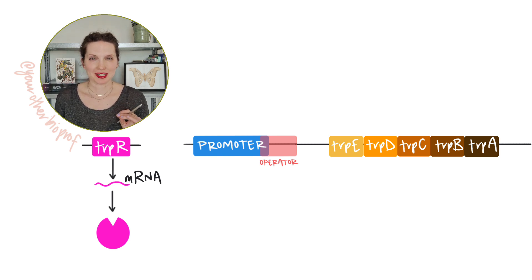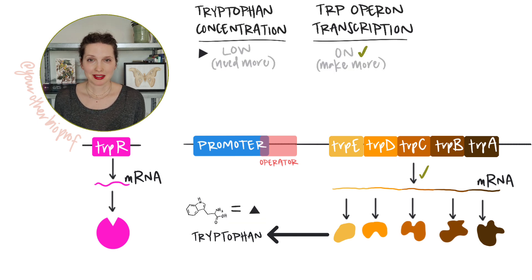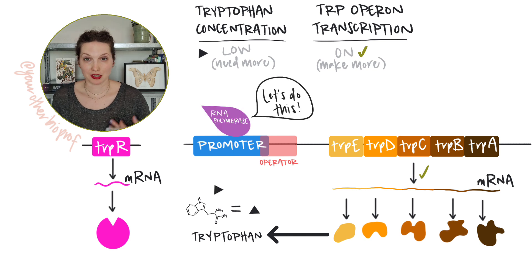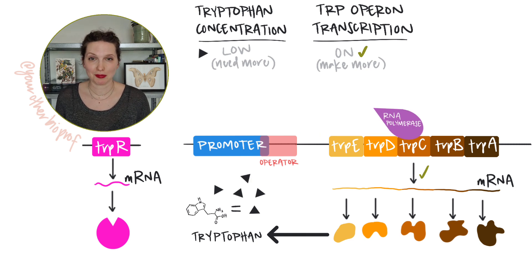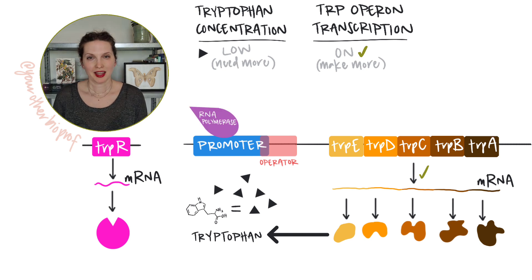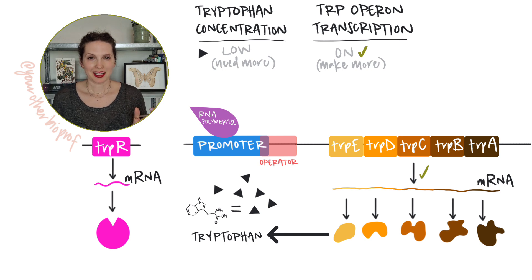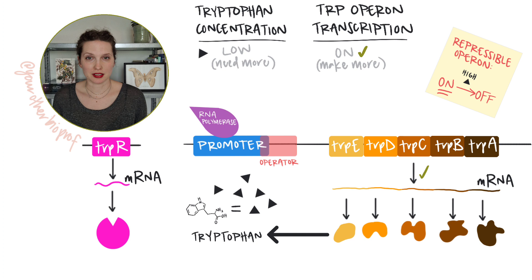It makes a little bit more sense if you keep the function in mind. What do the structural genes do? They encode enzymes for tryptophan biosynthesis — the production of tryptophan. That means that the cell is going to want to keep transcribing the structural genes, producing plenty of mRNA to make plenty of enzymes to make tryptophan, until it doesn't need any more tryptophan. This means that the trp operon is a repressible operon. Its default state, its typical state, is in the on position, transcribing the structural genes so that the cell can make tryptophan.